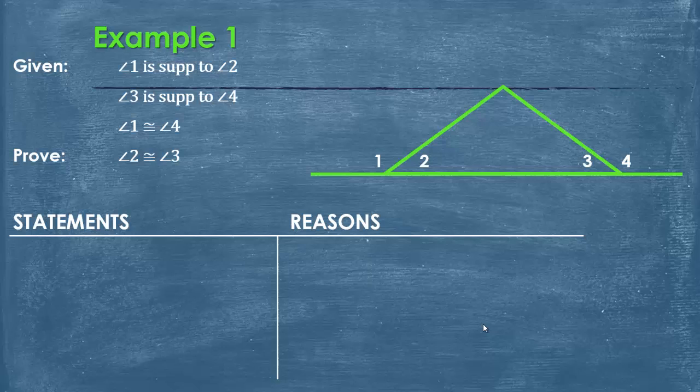Our given is angle 1 is supplementary to angle 2. Angle 3 is supplementary to angle 4. And that angle 1 is congruent to angle 4. And we need to prove that angle 2 is congruent to angle 3. Really, really easy proof. If I wanted to do this in two steps, I could.